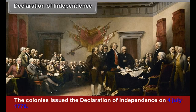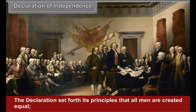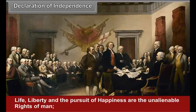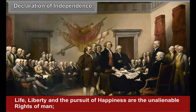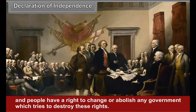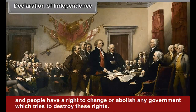George Washington led the army of the colonies. Declaration of Independence. The colonies issued the Declaration of Independence on 4th July 1776. Thomas Jefferson played an important part in drawing up its draft. The Declaration set forth its principles that all men are created equal. Life, liberty, and the pursuit of happiness are the unalienable rights of man, and people have a right to change or abolish any government which tries to destroy these rights.